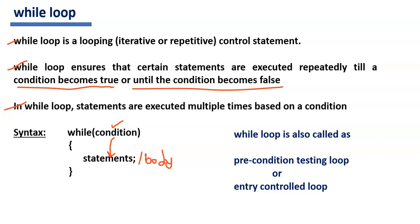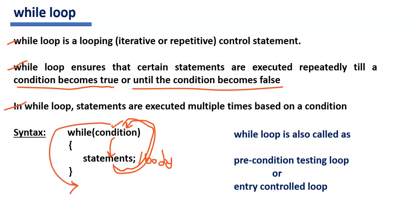When the condition is true, the body of statements is executed. Then the control comes back to the condition part. Again, if the condition is true, control enters the while loop and the statements are executed. This process is repeated until the condition becomes false. Whenever the condition becomes false, the program control moves out of the while loop.